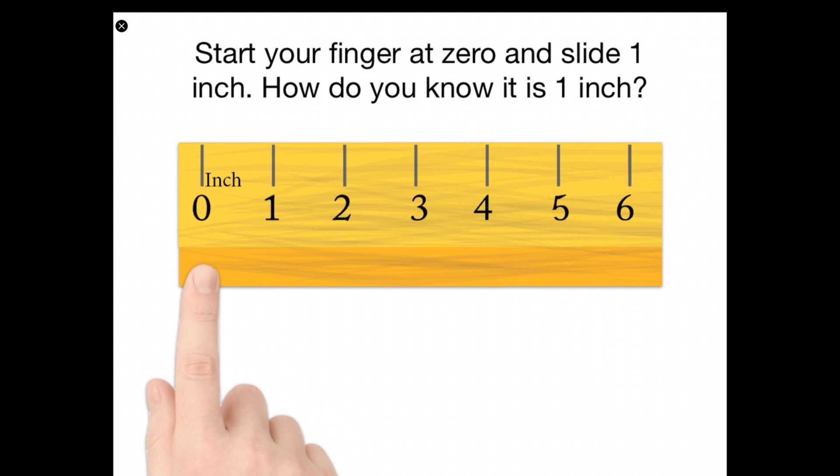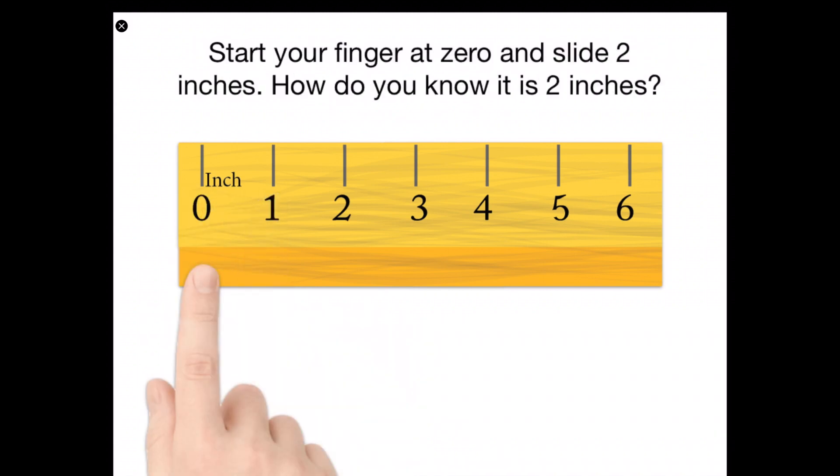Now start your finger at zero and slide one inch. How do you know it is one inch? Now start your finger at zero and slide two inches. How do you know it is two inches? Now start your finger at zero and slide four inches. How do you know it is four inches?